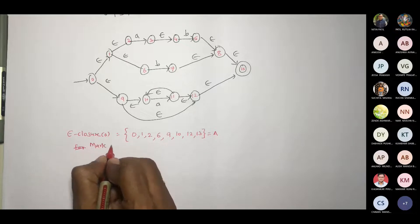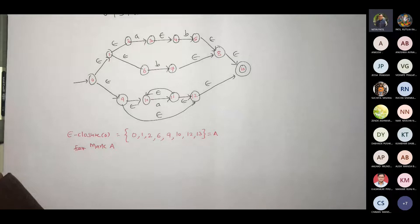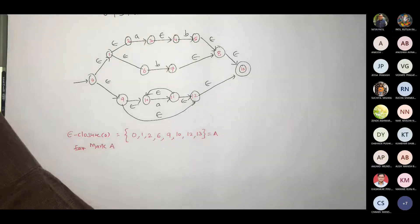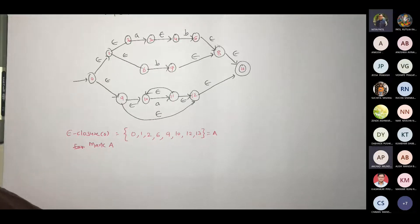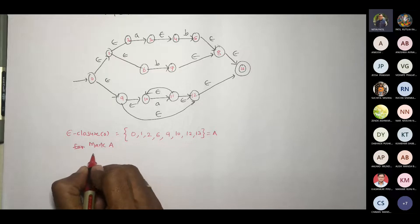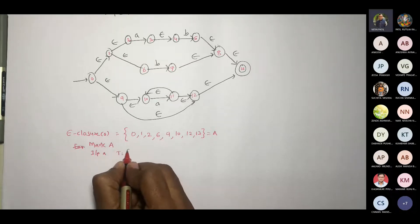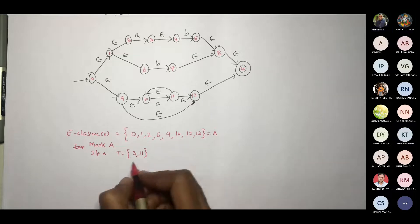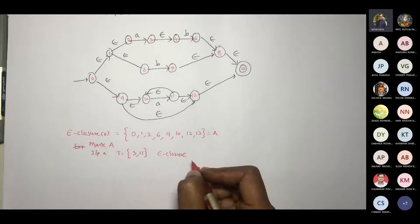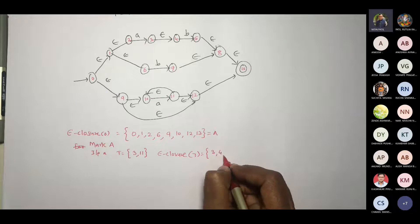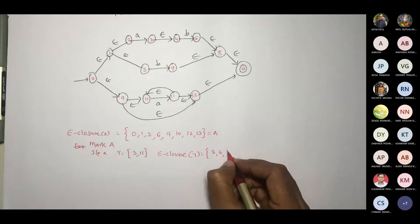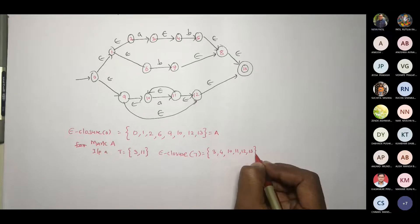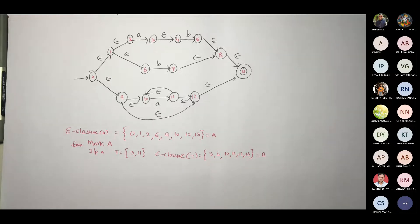Mark A. I assume I haven't solved this example. This was for the assignment. I got the same answer. So mark A. Input A — what would be T? The epsilon closure would be 3, 4, 10, 11, 12 and 13. Correct. Very good.